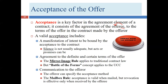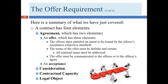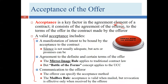We're going to talk about three requirements for acceptance, and these three requirements track very closely with the three requirements for an offer. The first is there has to be a manifestation of intent to be bound by the acceptance of the contract. This element mirrors the first element of the offer, where the offeror must manifest an intent to be bound by the offeree's acceptance.